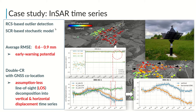Given the robust RCS outlier detection, we achieve average RMSE for most of the reflectors between 0.6 to 0.9 mm, which emphasizes the potential for early warning. Using double corner reflectors co-located with GNSS, one can get an assumption-less decomposition of line-of-sight displacement time series into vertical and horizontal displacement time series, which is especially important to correctly interpret the landslide movement.